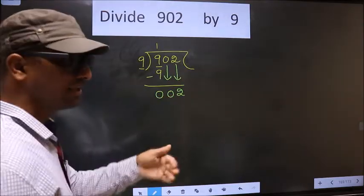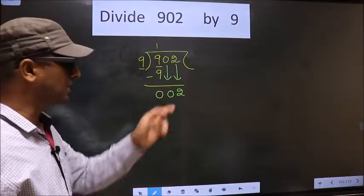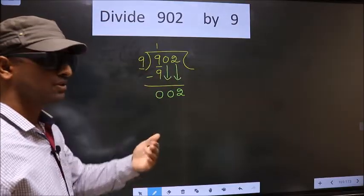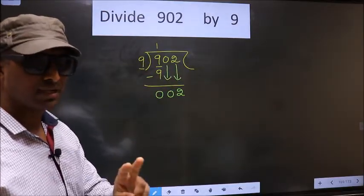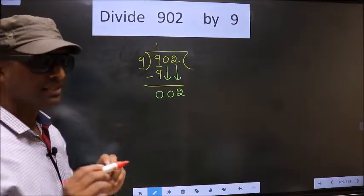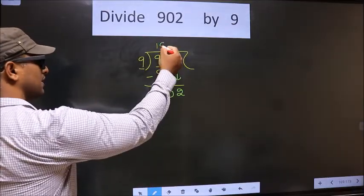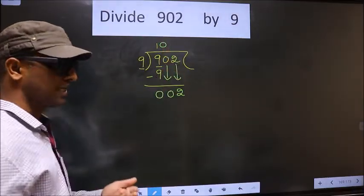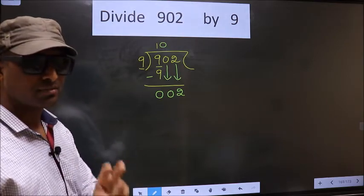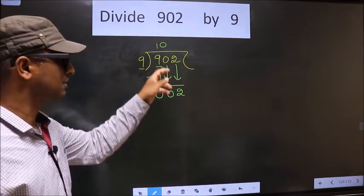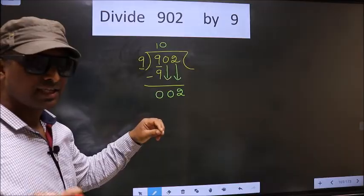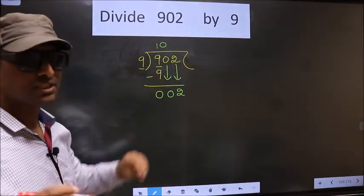Over here, we brought down 2 numbers. So whenever we brought down 2 numbers, then compulsory put 0 in the quotient. I repeat. Whenever you brought down 2 numbers, then compulsory put 0 in the quotient.